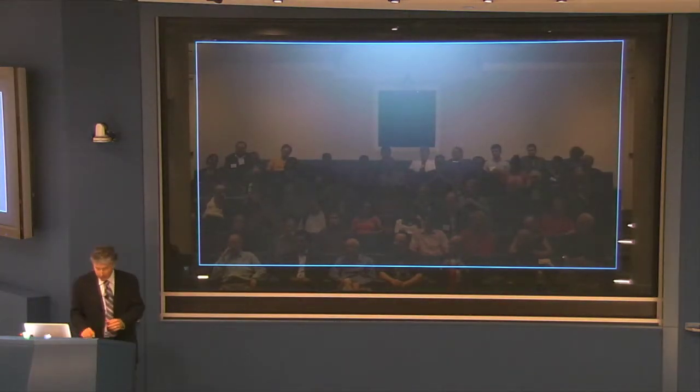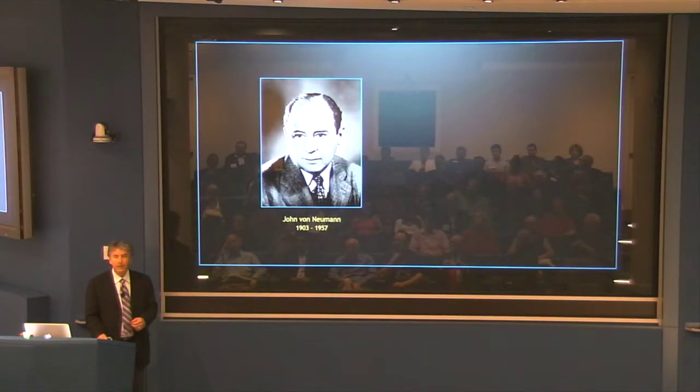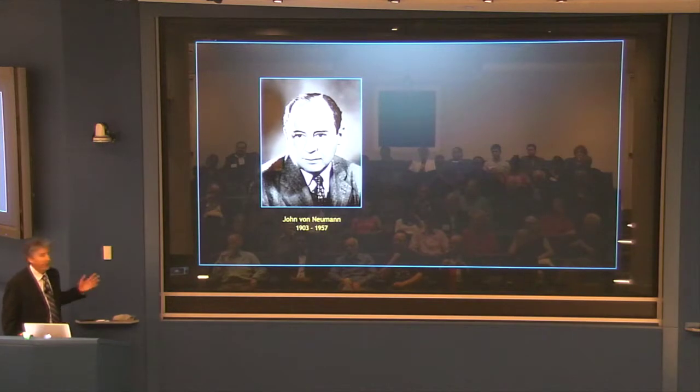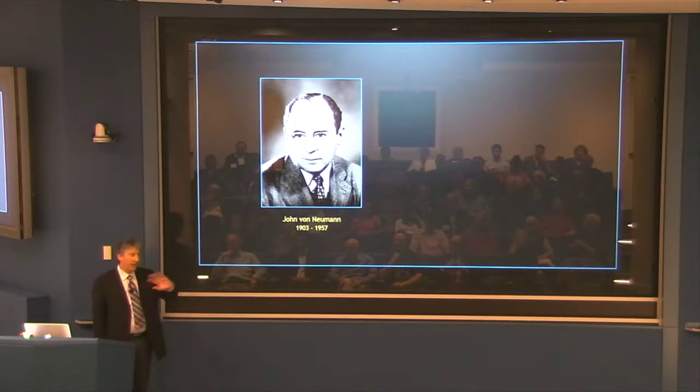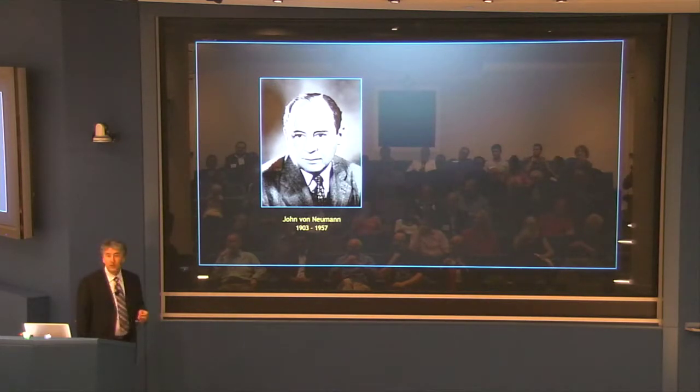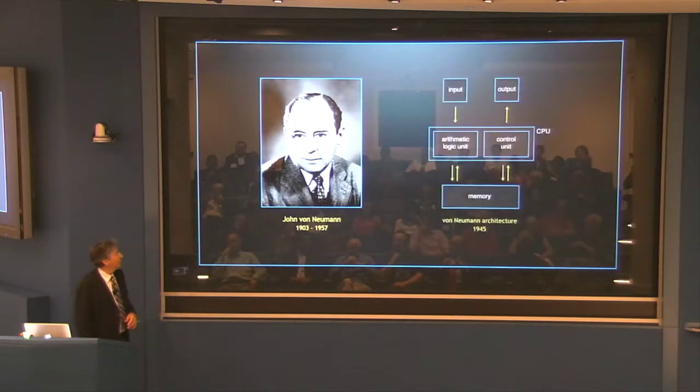I thought I would do something a bit different today than the usual scientific talk, recognizing the deep heritage of the Simons Foundation in supporting work in the applied mathematical sciences, and try to make a connection between the work of John von Neumann, one of the greatest applied mathematicians of all time, and what we think about with regard to the origins of life and Darwinian evolution.